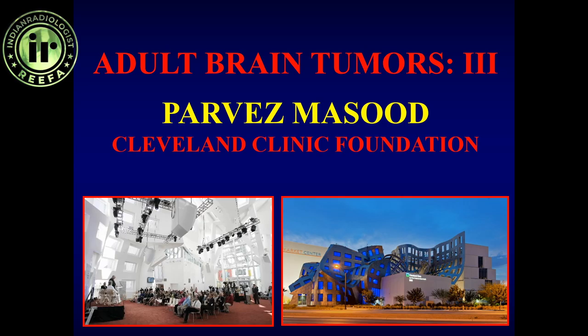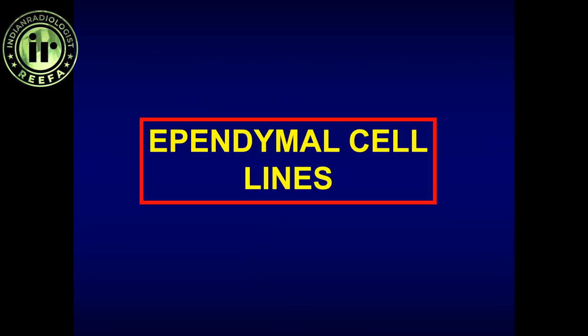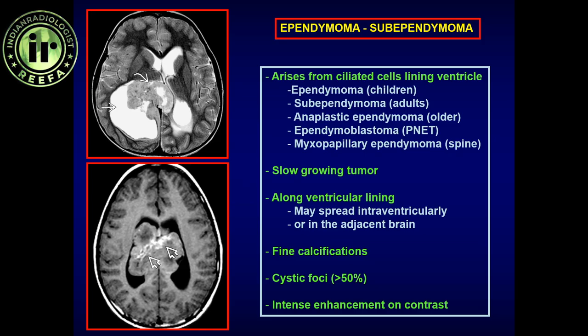We will first approach the ependymal lining, which is the lining of the ventricular system from the lateral ventricles all the way down through the fourth ventricle. The ventricles are lined by a ciliated epithelium called ependymal cells. When a neoplasm arises from these cells, it is classified as an ependymal cell tumor. There are two types: ependymoma and subependymoma. The more malignant is the ependymoma and the more benign is the subependymoma.